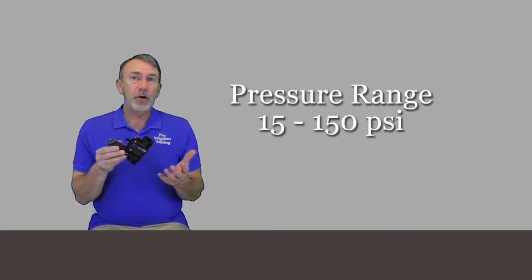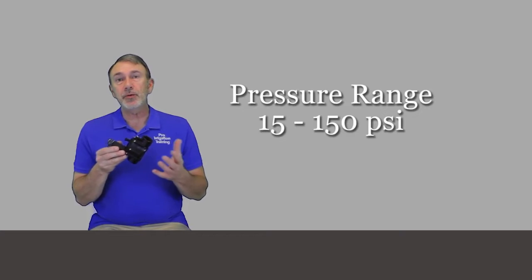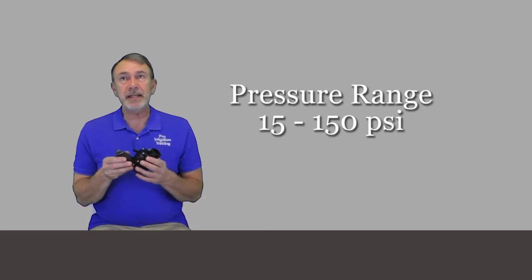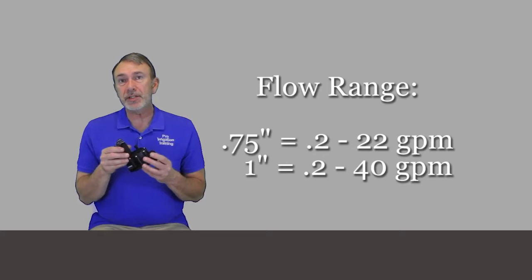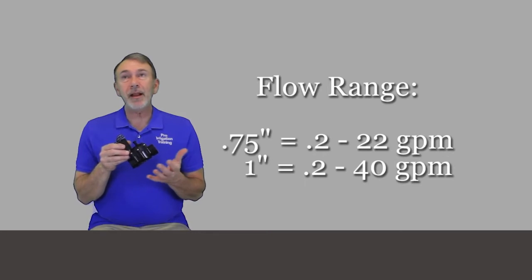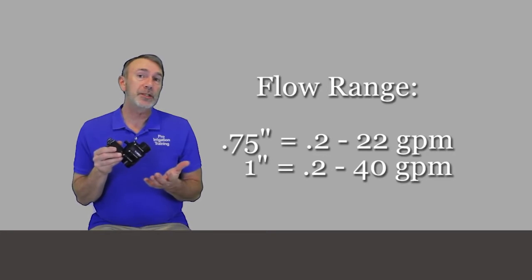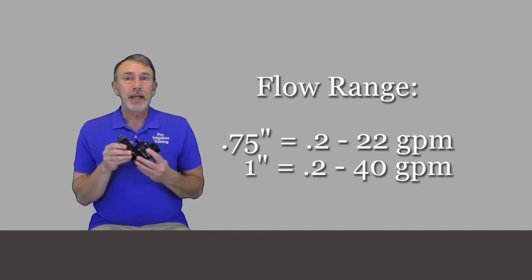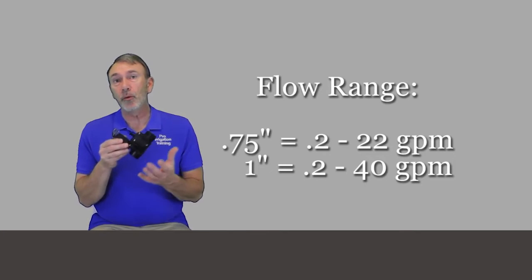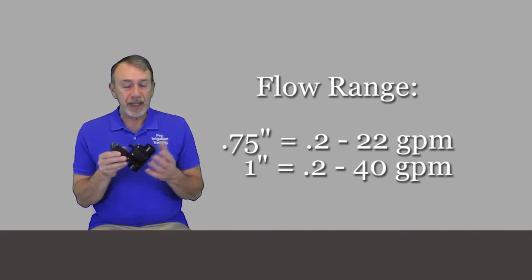Let's talk about some of the specifications for it. The pressure range on it is from 15 to 150 PSI at the inlet. The flow range on it for the three-quarter inch is 0.2 gallons per minute through 22 gallons per minute, and the one inch that I have here is 0.2 through 40 gallons per minute.